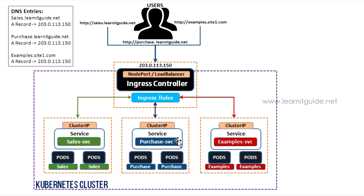You may ask: how is Kubernetes Ingress different from other Kubernetes services? Kubernetes services also help us access applications from outside the cluster, but Ingress does a lot more. It is a single resource that handles load balancing, name-based virtual hosting, SSL termination, and more.